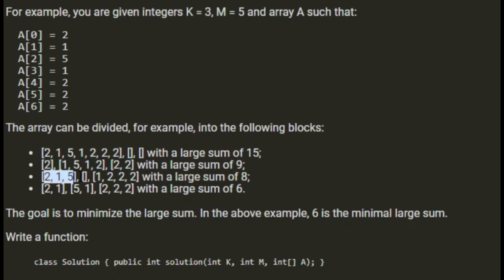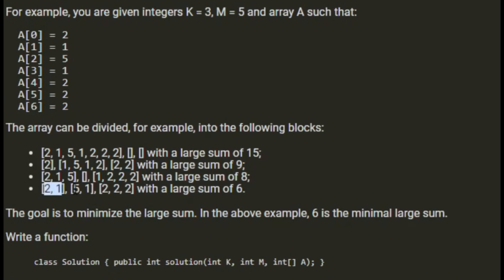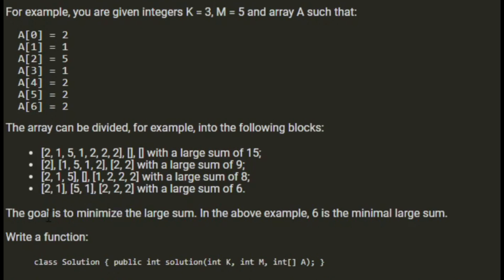If we divide it into [2, 1, 5], an empty block, and [1, 2, 2, 2, 2], the large sum is 8. If we divide it into [2, 1] and [5, 1] and [2, 2, 2, 2], the large sum is 6 — both add up to 6. The goal is to minimise the large sum, and in the above example, 6 is the minimum large sum.